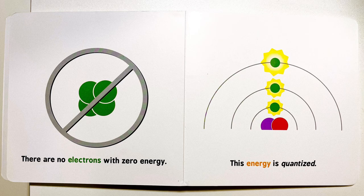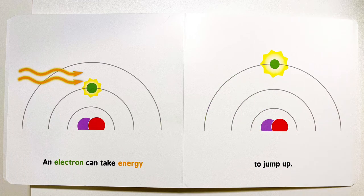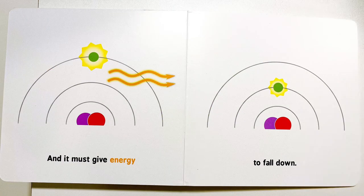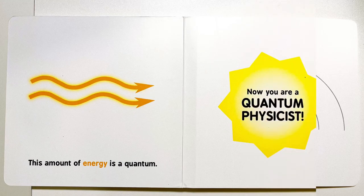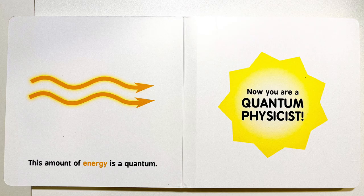This energy is quantized. An electron can take energy to jump up and it must give energy to fall down. This amount of energy is a quantum. Now you are a quantum physicist.